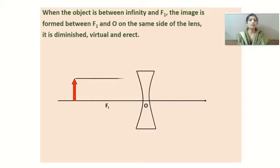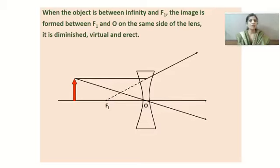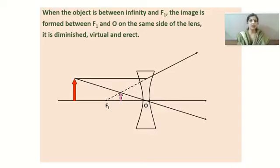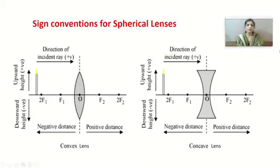If you keep the object anywhere between infinity and focus F₁: the first ray parallel to the principal axis after refraction diverges but appears as if coming from the focus; the second ray through the optical center goes undeviated. Both rays appear to meet between F₁ and the optical center — that is where the image is formed. The image is diminished, virtual, and erect. For a concave lens, regardless of where the object is placed, the image always forms between F₁ and the optical center, and is always diminished, virtual, and erect.